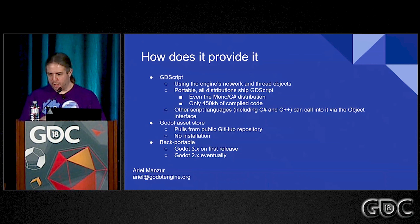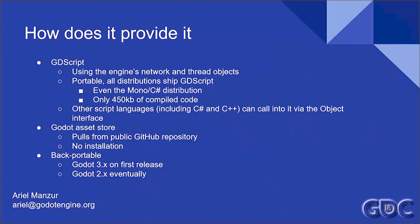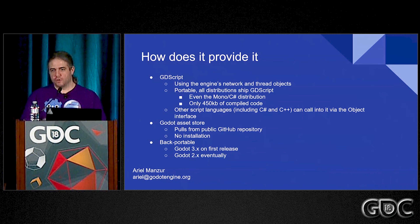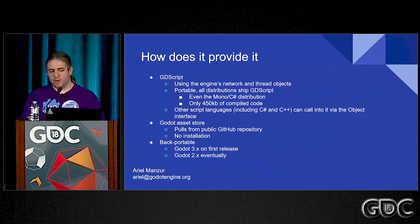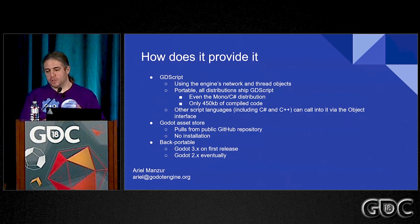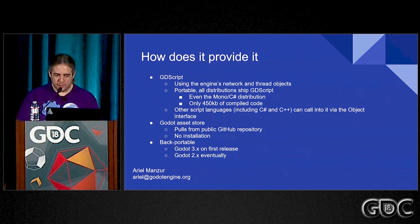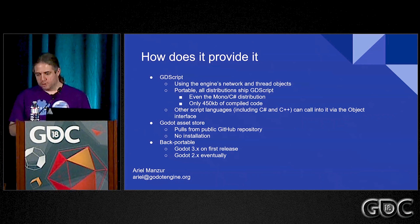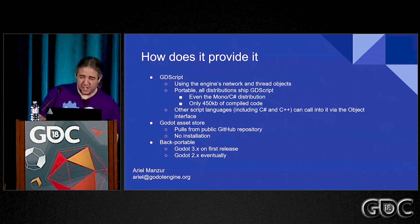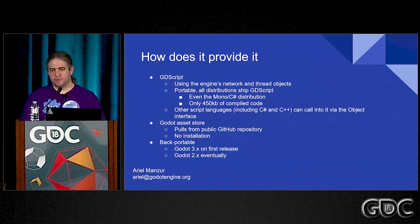So how do we implement and distribute this? We're using GDScript. GDScript is the scripting language of the engine. The reason for this is it's very portable — we don't need to compile one module for each of the 12 platforms that we ship for. C-sharp and other script languages can call into this module through the object interface. All the distributions ship with GDScript. GDScript is like 400 kilobytes, so it's not a big deal. It makes it very portable. It comes via the asset store, it's on a GitHub repository.